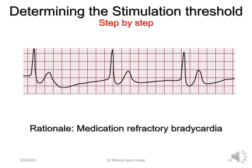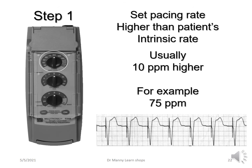Determining the stimulation threshold — here is the step-by-step process. The rhythm shows a bradycardia at approximately 30 beats per minute, which looks like an idioventricular rhythm, possibly due to a medication refractory problem. Step one: set the pacemaker rate higher than the intrinsic rate. If the rate is 30 beats per minute, you could set it at 40, but typically you'd set it at something normal — about 70 to 75 pulsations per minute.